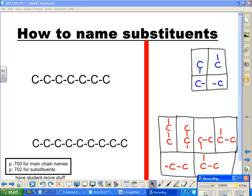What we're looking at is how to name substituents when we put them on to a long-chain hydrocarbon, or any-chain hydrocarbon. And these are just alkanes. There are no double bonds anywhere.